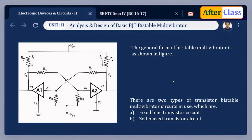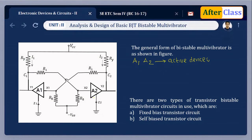We will now understand the working of the bistable multivibrator using a generalized form. A1 and A2 are the active devices — here we use transistors. The transistor has three terminals: collector, base, and emitter, represented as X (input), Y (output), and Z (emitter terminal). The polarities shown with +VCC are correct for NPN transistors; for PNP transistors, the polarities must be reversed.